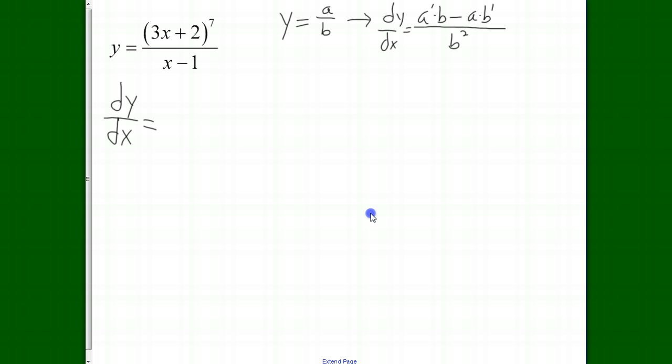So the derivative of the numerator, this is where our chain rule comes into play. This is going to be 7 times the inside function of 3x plus 2 to the 6th power, multiplied by the derivative of the inside function, which is just 3. So that's just the a prime. Now we multiply by the denominator, b, x minus 1.